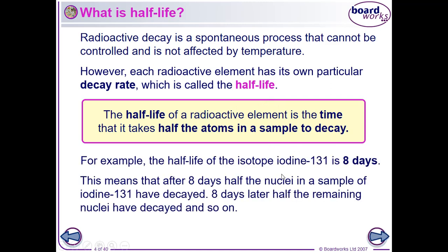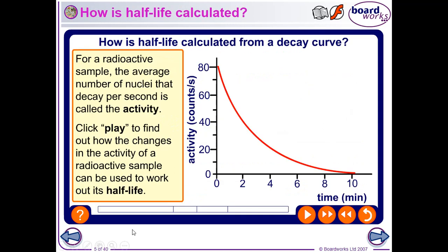The half-life is also the time for the count rate from a sample to drop to half of what it was when we started. For example, iodine-131 has a half-life of 8 days. So if we start off at 4,000 counts per second, after 8 days we'll be getting 2,000 counts per second. On a graph we'll see a smooth curve. When drawing smooth curves you need to practice: plot the points, and if you put your hand with a bit of paper you can use your pencil to draw a smooth curve without moving your hand.